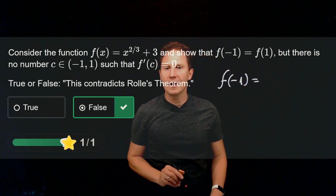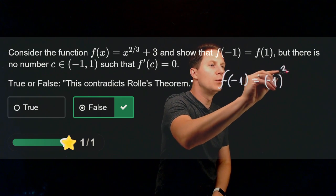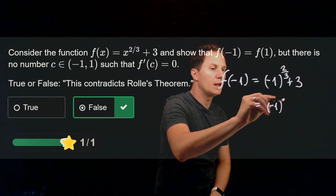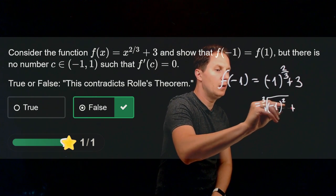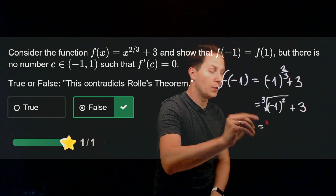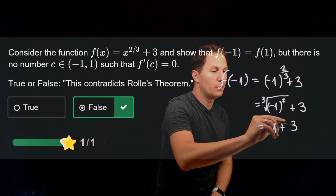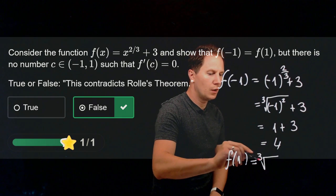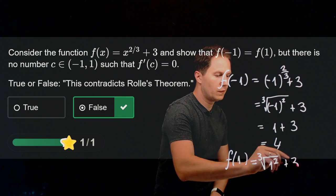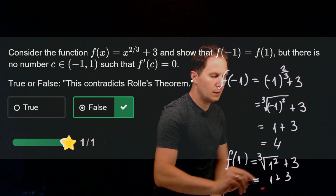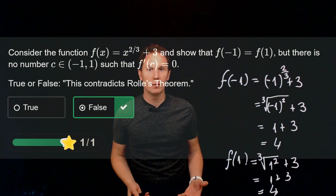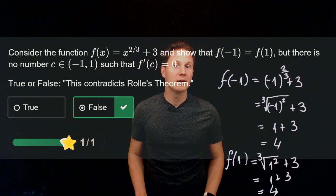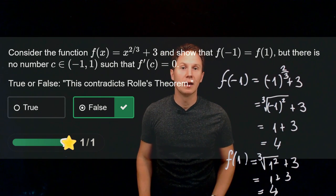Let's check that the endpoint values are indeed the same. f(−1) = (−1)^(2/3) + 3, which means we take the cube root of the square of −1, giving the cube root of 1, which is 1 + 3 = 4. Similarly, f(1) = the cube root of 1² + 3 = 1 + 3 = 4. So the endpoint values are the same. The function is continuous on the closed interval [−1, 1], but it is not differentiable at every point between −1 and 1.